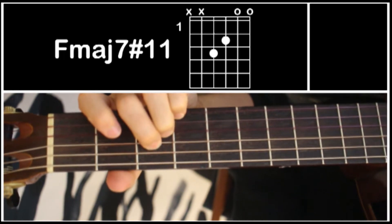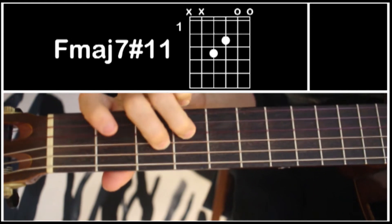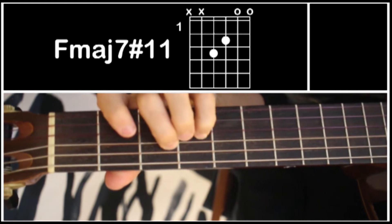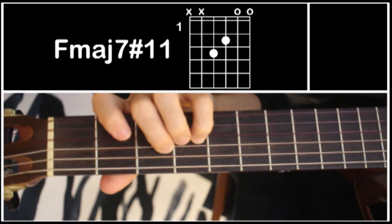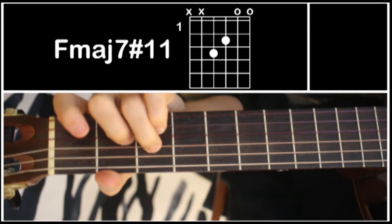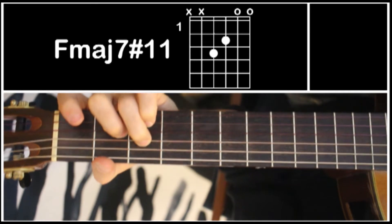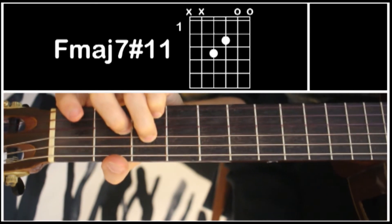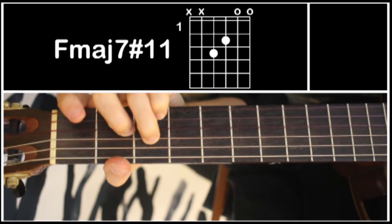That'd be the 11 there. If you make that sharp, if you sharpen it, you end up with this note. And that's in this chord. That B there on top of the F, that's a sharp 11. It gives a very unique sound. It's very colorful.